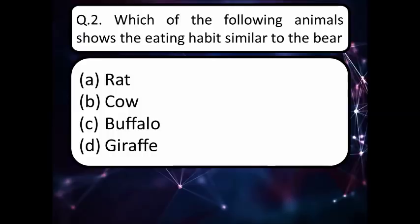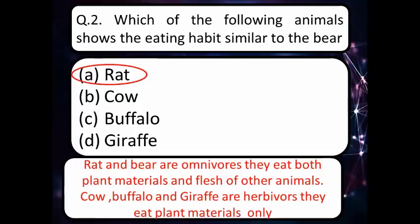Our next question is: which of the following animals shows the eating habit similar to the bear? Read the options carefully and think about the correct answer. Write down your correct answer in the comment box. The correct answer is rat — rat and bear are omnivorous.